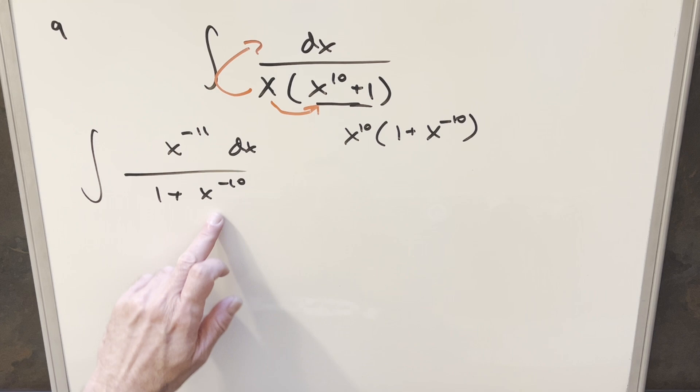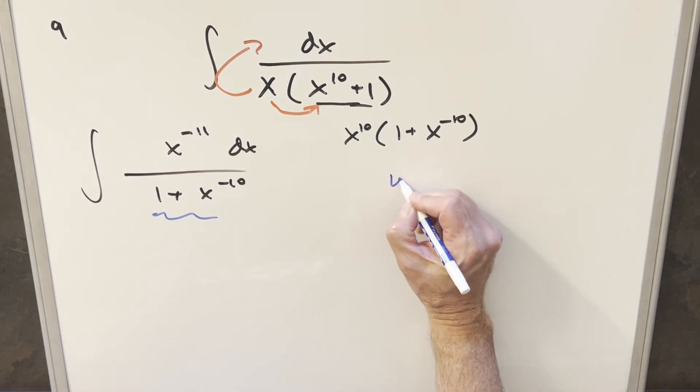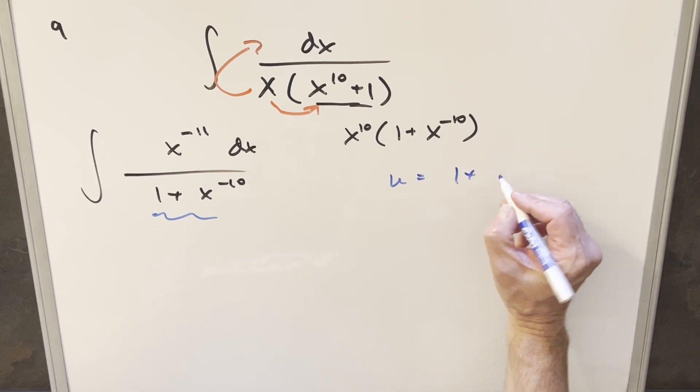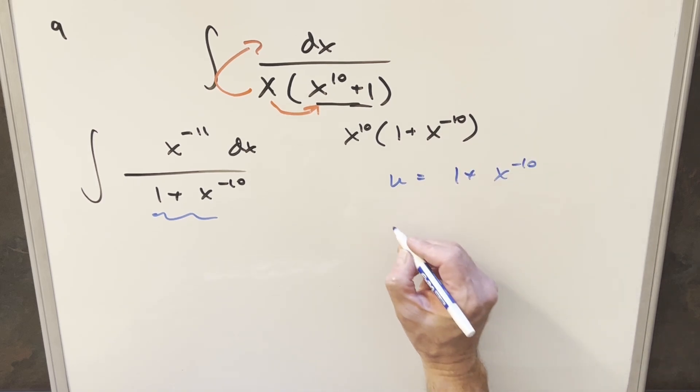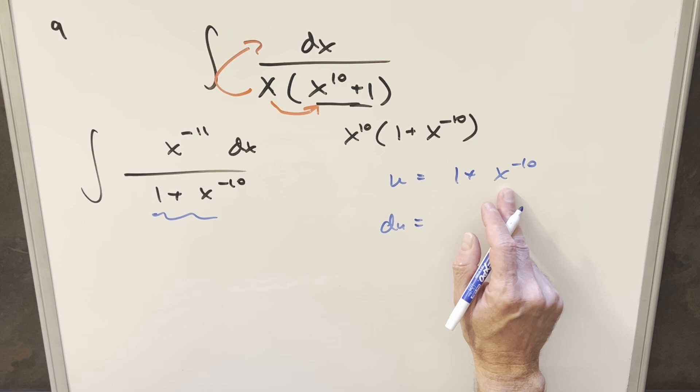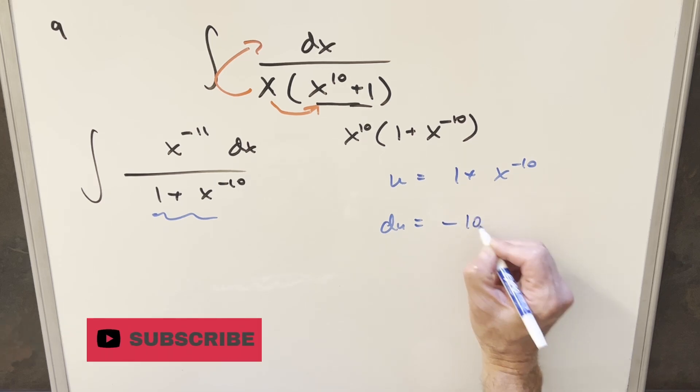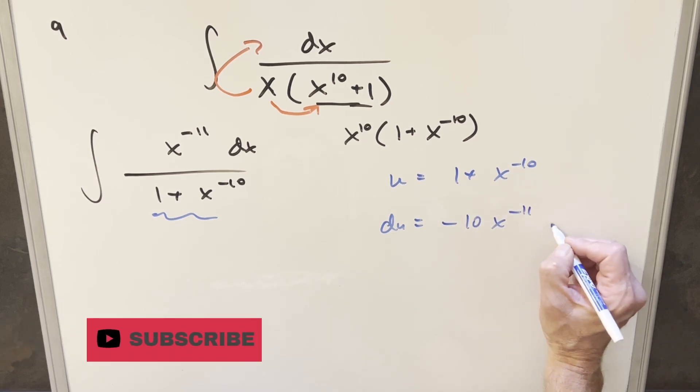But doing it like this, this is in pretty good shape for a u substitution because we can make the whole thing here our u. So I'll set u equal to 1 plus x to the minus 10. Take a derivative on it. Derivative of 1 is 0. Derivative here is going to be minus 10 x to the minus 11 dx.